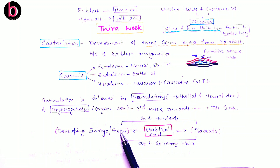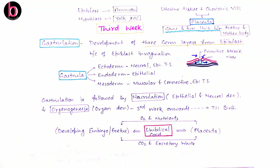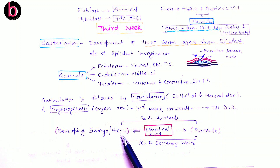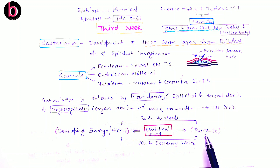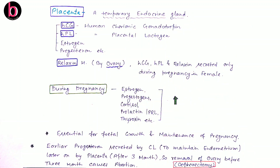The fetus depends on the mother's body for oxygen and nutrients via the placenta. There is no direct blood supply from the mother into the fetus; instead, oxygen and nutrients are supplied by diffusion through the placenta, and carbon dioxide as well as excretory waste from the embryo or fetus pass back to the placenta and by diffusion back into the mother's body.